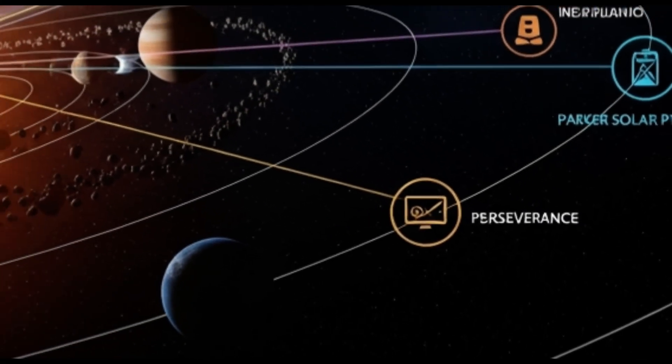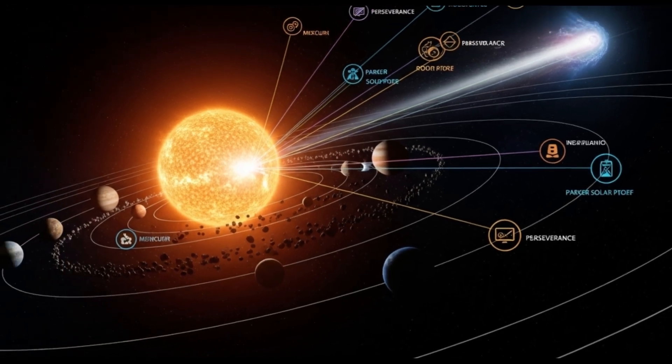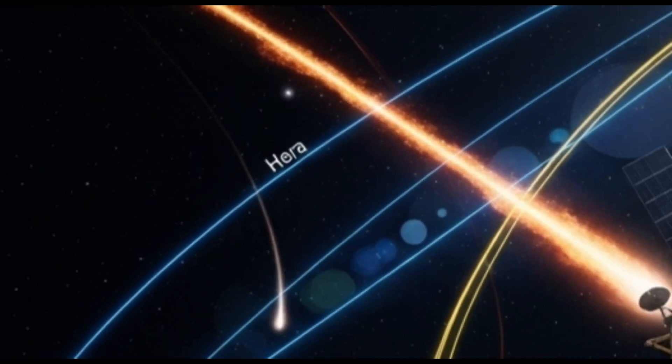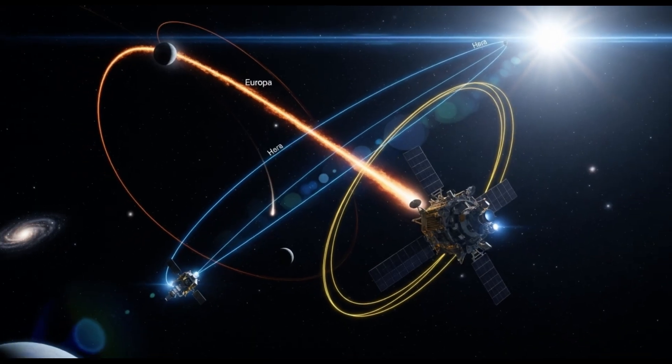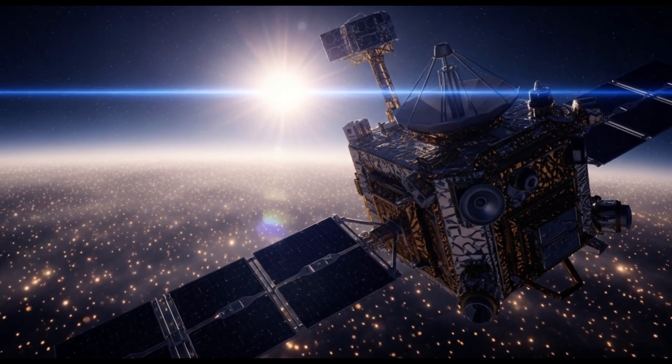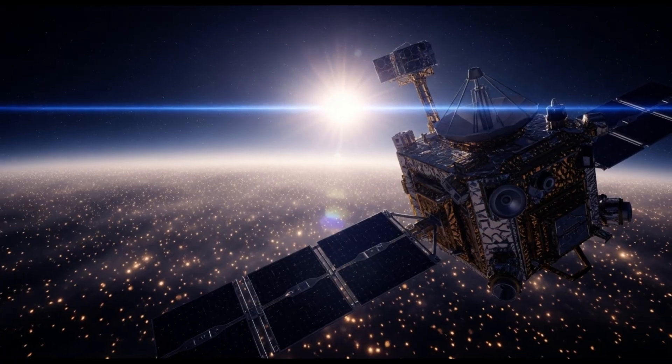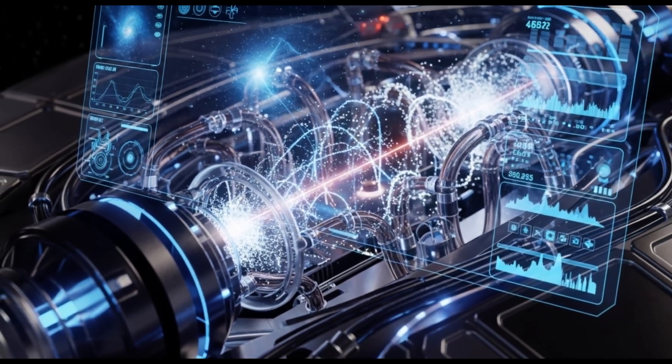An entire fleet of probes are listening in, from the Perseverance rover on Mars to the Parker Solar Probe near the sun. Incredibly, two other spacecraft, Hera and Europa Clipper, might get an even closer look. They are positioned to potentially fly through the faint trail of dust left behind by 3I/ATLAS. This would be the first time in history we could directly analyze particles from another star system.